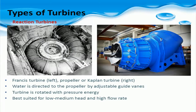Reaction turbines, on the other hand, are completely submerged in the water stream. These turbines work best when the flow of water through the penstock is high but the water elevation head is low. The flow of water is controlled via wicket gates and directed to the runners by adjustable guide vanes. As the water flows through the turbine, pressure and velocity energy is extracted and used to turn the turbine.